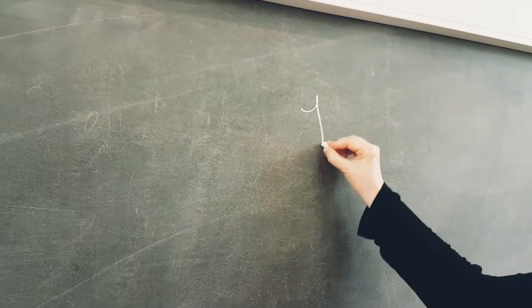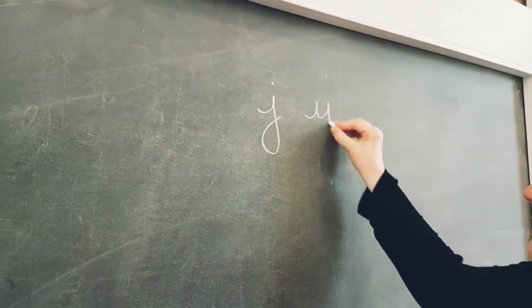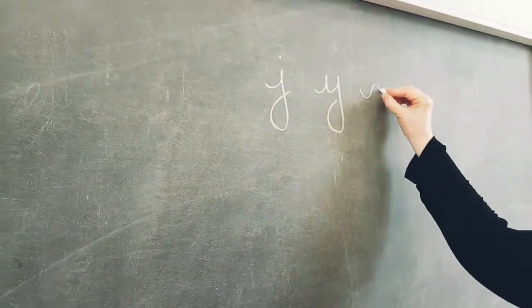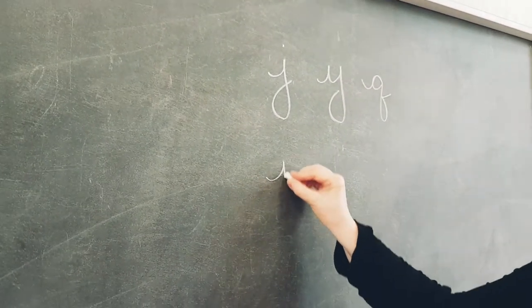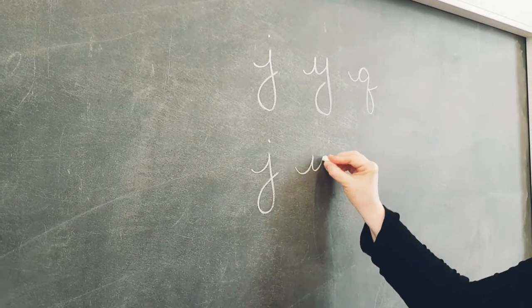The next letters we're going to look at are J, Y, and Q. Now we're starting to get a little trickier. See how they all look similar to one another with their loops at the bottom?